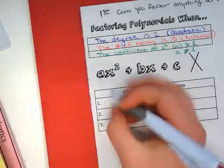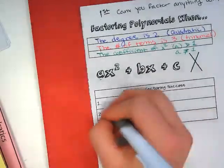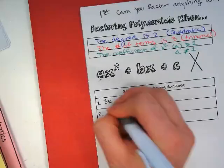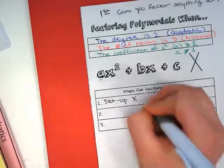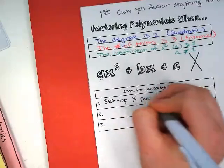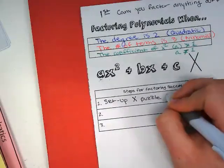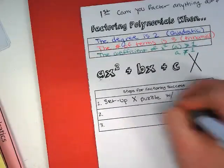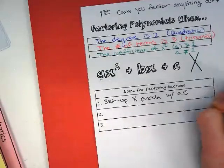So the first thing that you will do if you are left with just that a in front is you're going to set up the x puzzle. But it's going to look a little bit different. In the product place, we'll have a times c as our product.